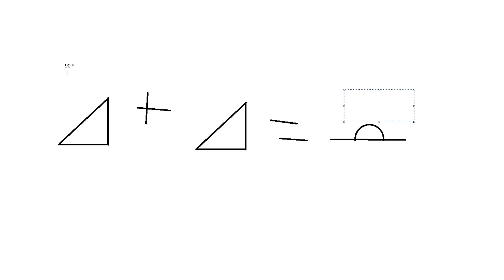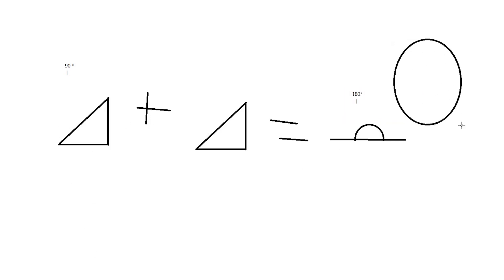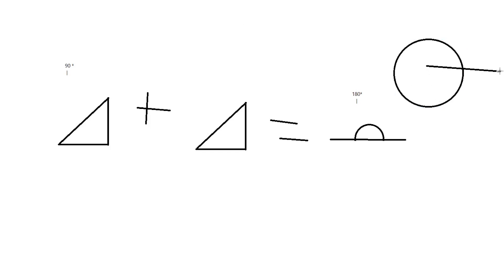Let's write this down: 180 degrees. The next type of angle is a 360 degree angle, or a circle. This is what it looks like. That covers the basics of angles and geometry.